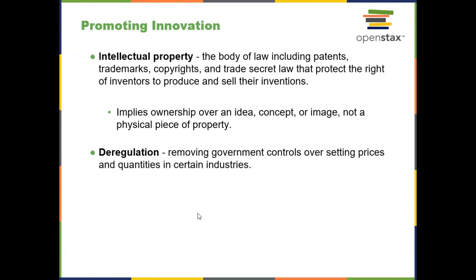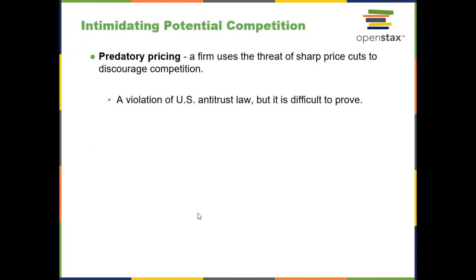Sort of the opposite of legal monopoly is deregulation — removing some of these barriers to allow for more competition and more activity in the market. Another barrier to entry that firms will sometimes use is predatory pricing: the threat of sharp price cuts to discourage competition. It is a violation of U.S. and most international law, but it's very difficult to prove. When we talk about international trade, we'll go more in-depth on predatory pricing. In reality, there's no economic logic behind predatory pricing.